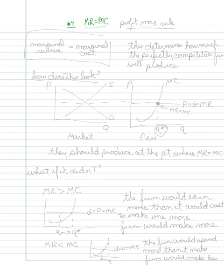Now what I want to do is give an overview of this very important rule where marginal revenue equals marginal cost. This is known as our profit maximizing rule. So marginal revenue equals marginal cost.